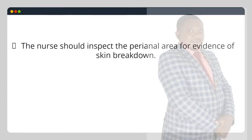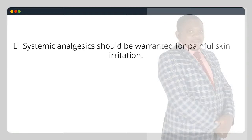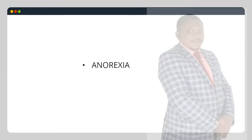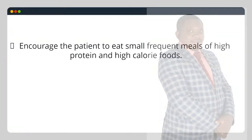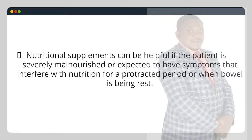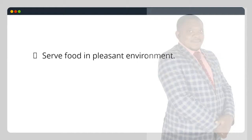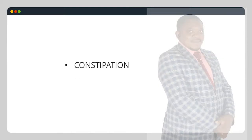Inspect the perianal area for evidence of skin breakdown. Systemic analgesics should be given for painful skin irritation. Monitor the weight of the patient for weight loss. Encourage the patient to eat small frequent meals of high-protein and high-calorie foods. Nutritional supplements can be helpful if the patient is severely malnourished, expected to have symptoms interfering with nutrition for a protracted period, or when the bowel is being rested. Serve food in a pleasant environment.